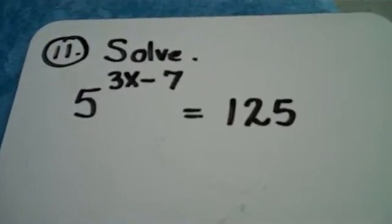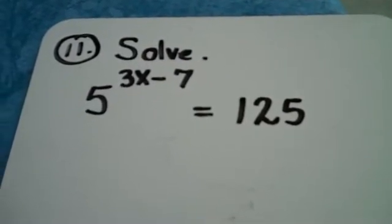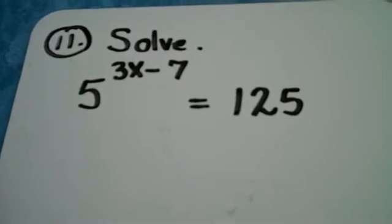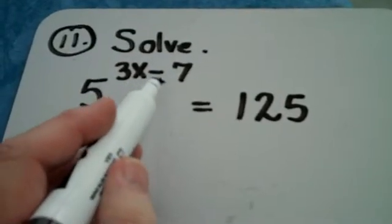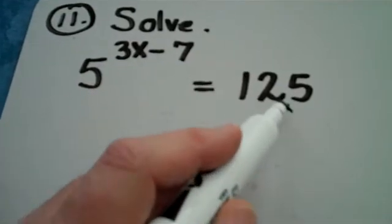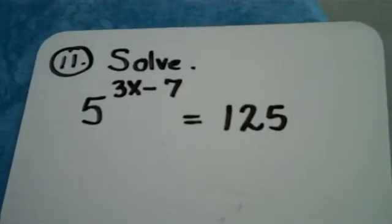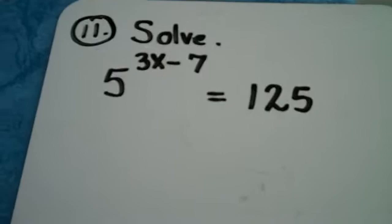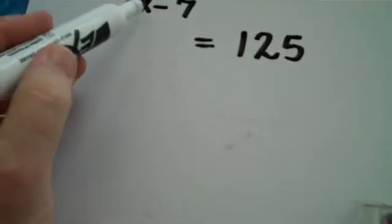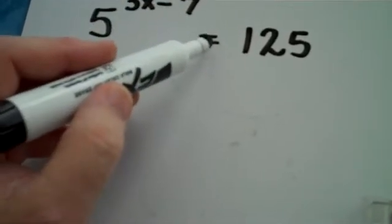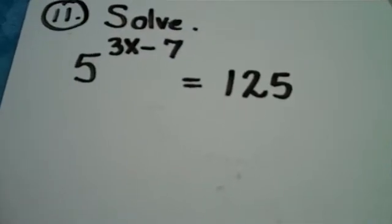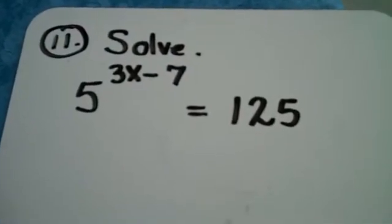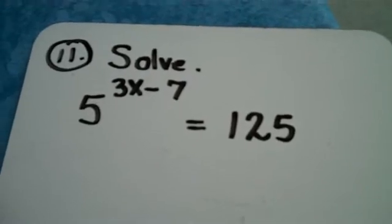Let's continue with question number 11 on the Math 1105 Final Exam Review. 5 raised to the 3x minus 7 power equals 125. That is referred to as an exponential equation. The reason it's exponential is because what I'm solving for is currently stuck up in the exponent position.